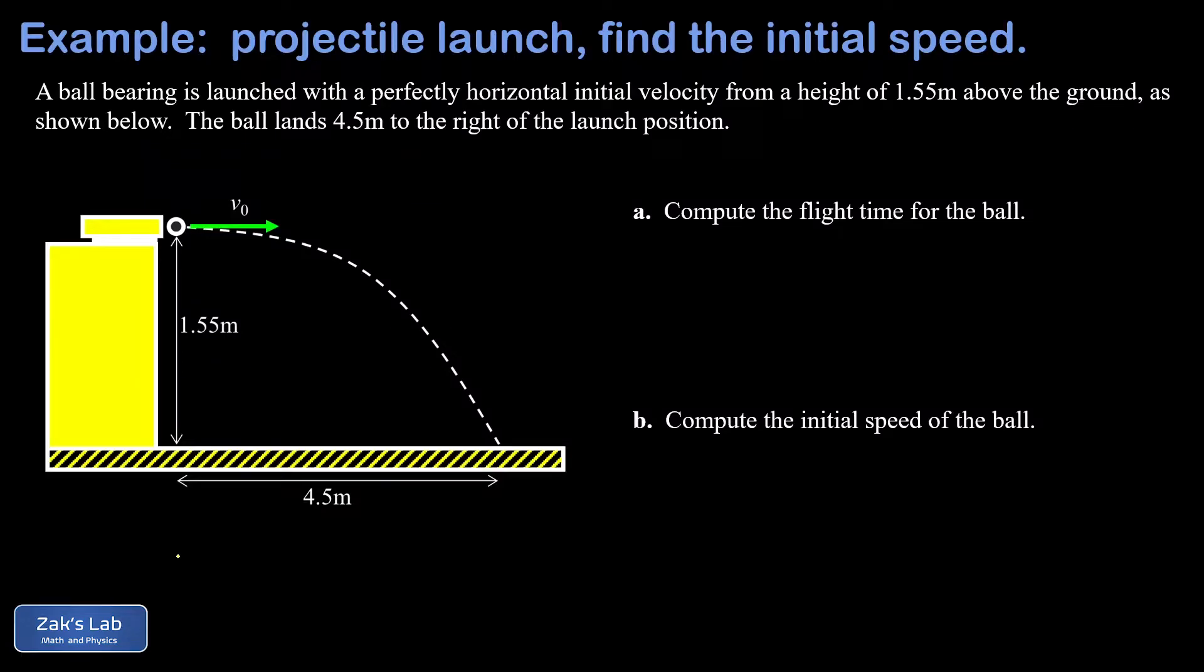In this video, we're looking at a projectile motion problem where the launch is perfectly horizontal. We have a spring gun shooting a ball bearing horizontally with an unknown initial speed. What we're given here is the height of the launch and the range for the launch.